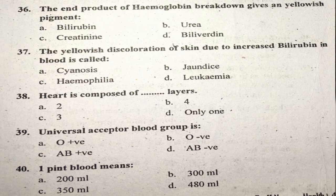Question thirty-six: The end product of hemoglobin breakdown gives what pigment? The end product of hemoglobin breakdown is bilirubin, a pigment.